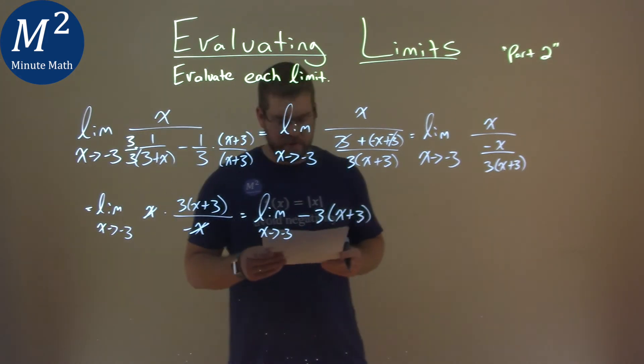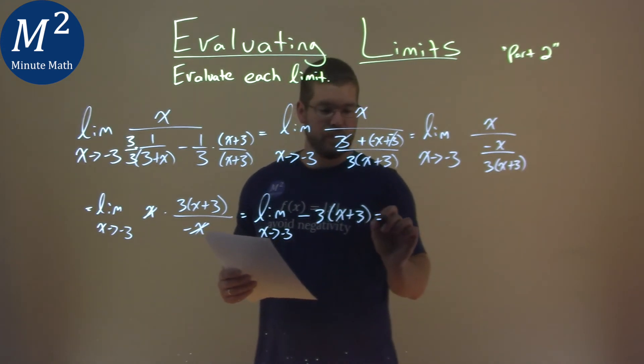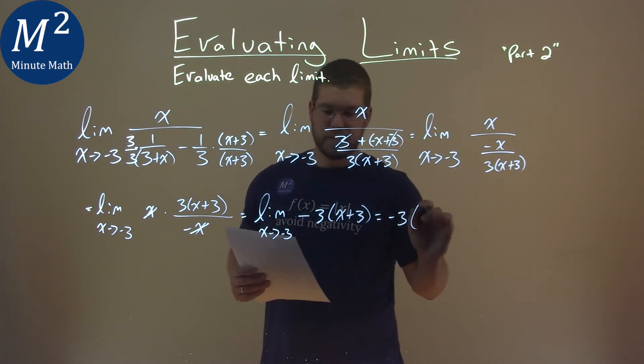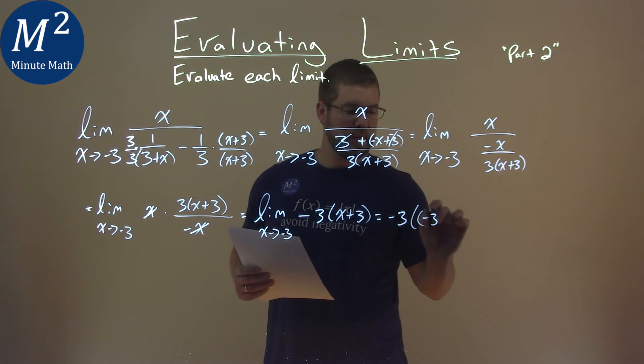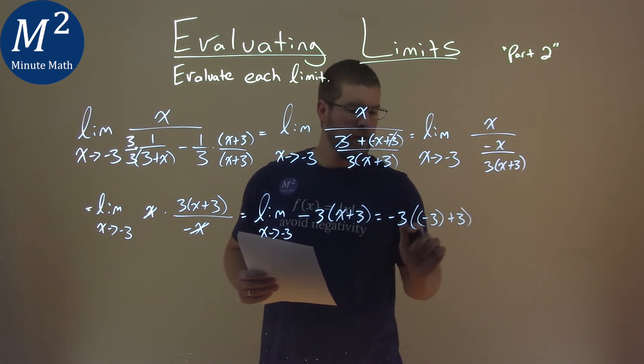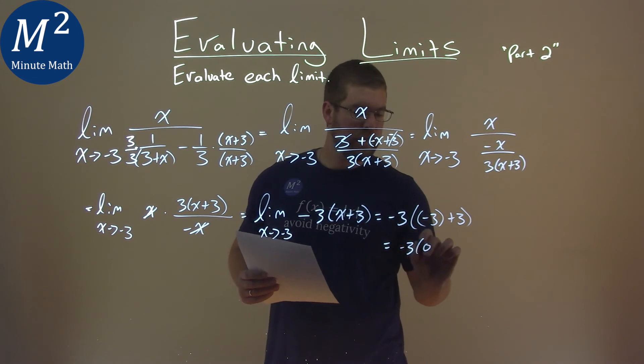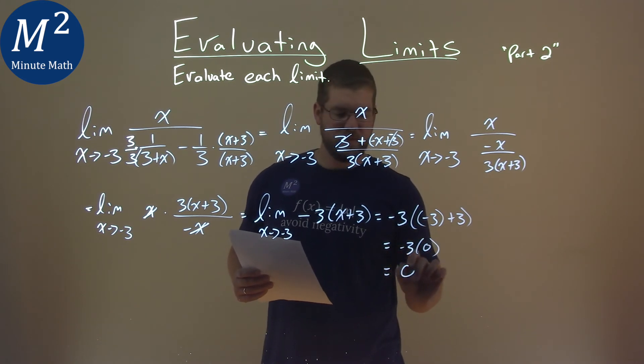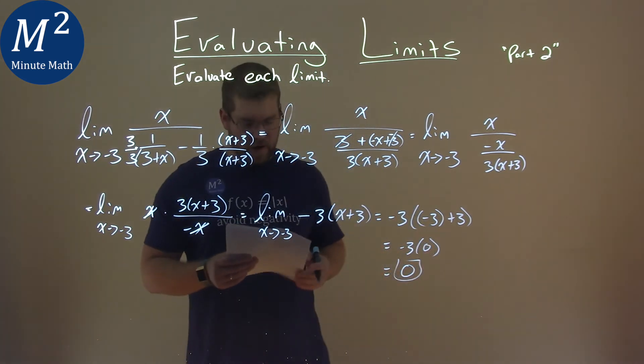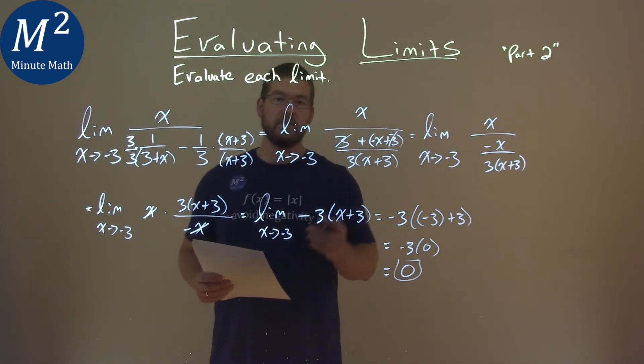And now we can evaluate the limit right there at negative 3. We can plug it in. Negative 3 times negative 3 plus 3. Well, negative 3 plus 3 is just 0. So negative 3 times 0 is, you guessed it, 0. And so my final answer here for this limit is 0.